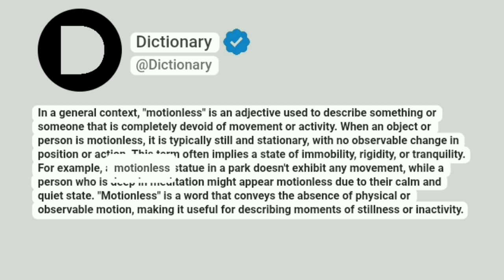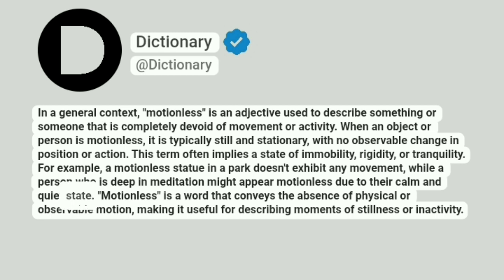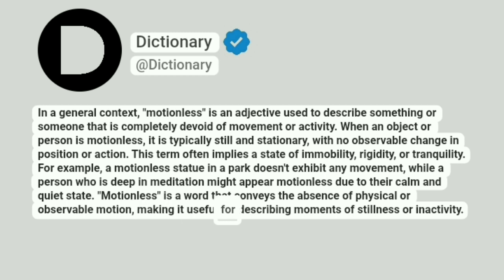For example, a motionless statue in a park doesn't exhibit any movement, while a person who is deep in meditation might appear motionless due to their calm and quiet state. Motionless is a word that conveys the absence of physical or observable motion, making it useful for describing moments of stillness or inactivity.